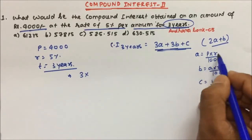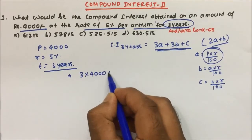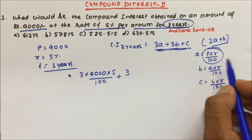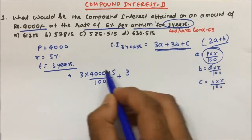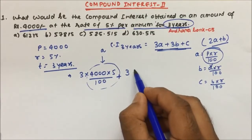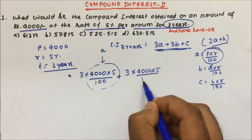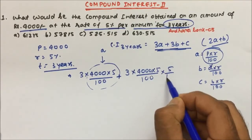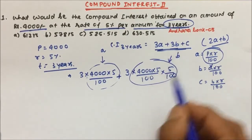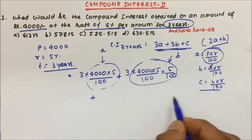For 3a: a is P into r by 100, so that is 4000 into 5 divided by 100. For 3b: b is a into r by 100, so 3 into 4000 into 5 by 100 into 5 by 100. This whole expression gives us 3b. Now we add 3a plus 3b plus c.